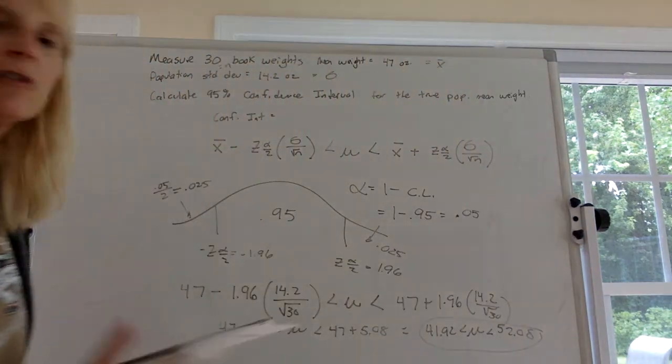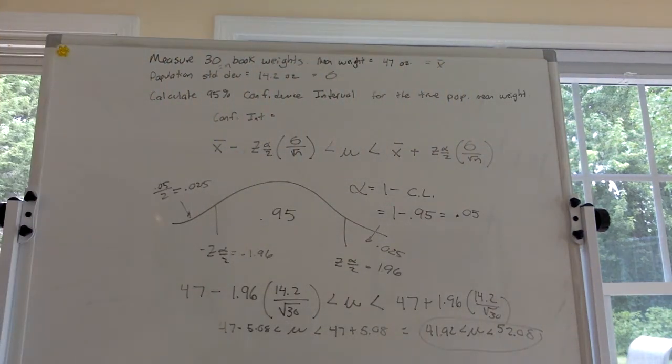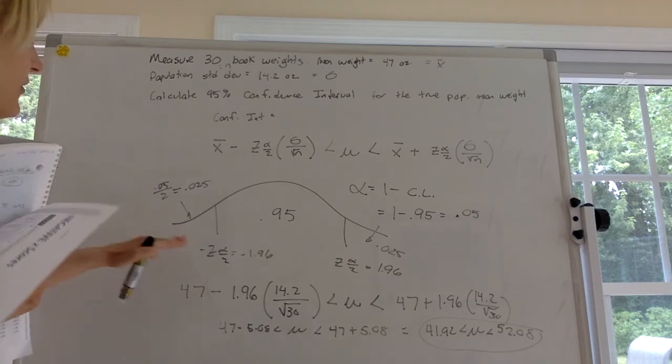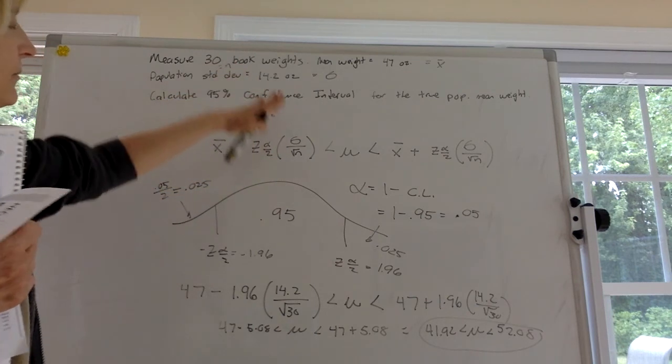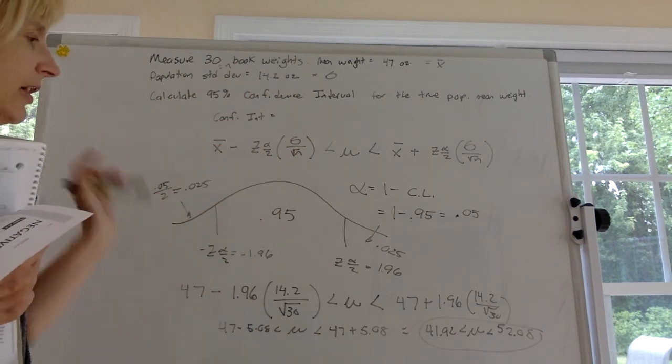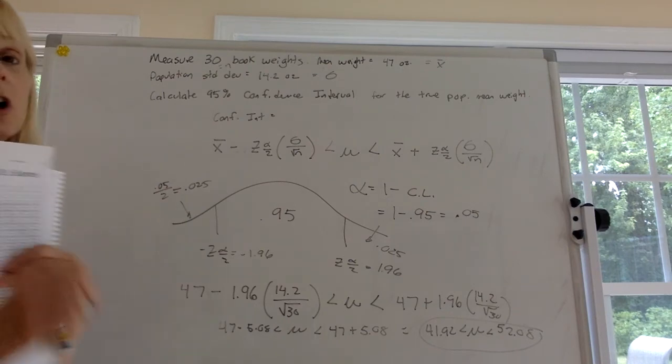Well that's our confidence interval, our range of numbers that we expect the mean for the book weights is going to fall within. So I hope that helps. It's kind of a two step. First you have to figure out the z alpha over 2, and then you have to know what information they gave you and plug it into the formula. Good luck.